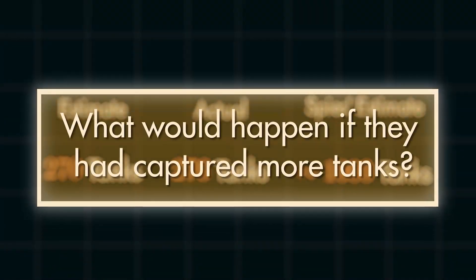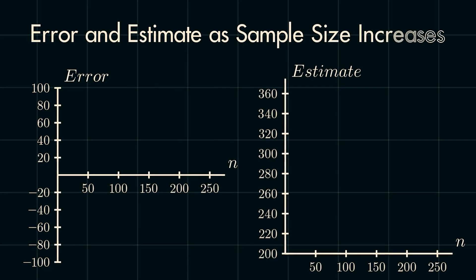But what would happen if you had captured more tanks? In this case, let's assume that the true total number of tanks is 276, and now I'll use a computer to simulate capturing these serial numbers without replacement in the interval 1 to 276. While not always the case, clearly the estimates trend closer to the actual value of 276.